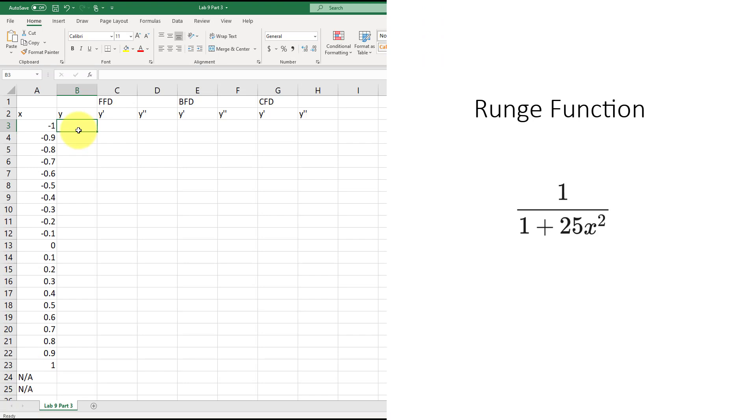In this video, we will use the Runge function as our y values. So this will be equal to 1 divided by 1 plus 25 times x squared, where x is at a3, and then squared. Once again, I will select and drag the corner to auto-populate. I will set the last two to not applicable.